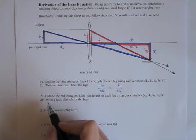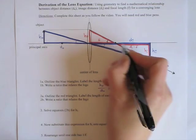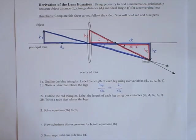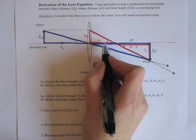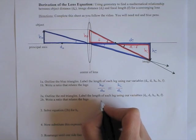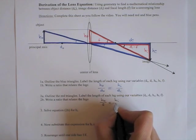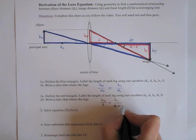Now we're ready to write a ratio that relates the legs. These are similar triangles, once again, because these two angles are equal. So taking the side opposite the angle over the side closest to the angle, we have HO over F equals HI over DI minus F.